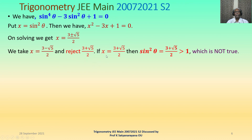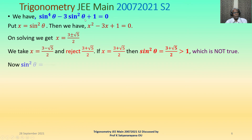If we take x = (3 + √5)/2, then sin²θ = (3 + √5)/2, which is greater than 1 — this is not true. Therefore we take x = (3 − √5)/2, that is sin²θ = (3 − √5)/2.